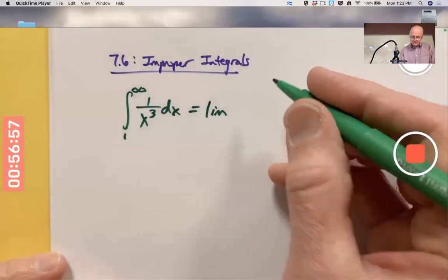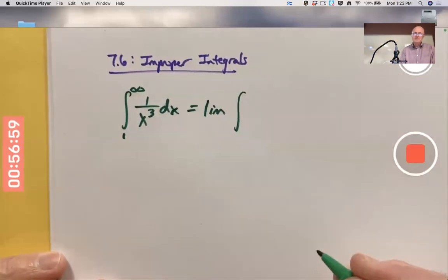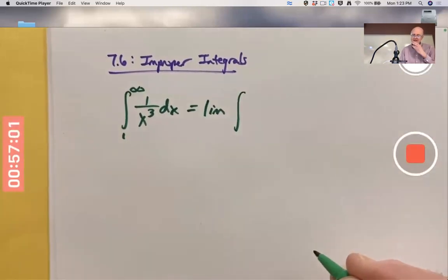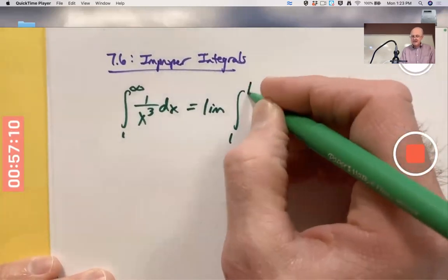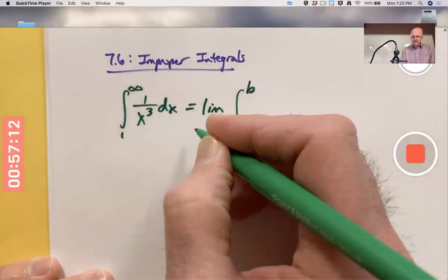What proper integrals? It's a limit of proper integrals where the upper limit of the integral is a variable. And that variable, I'll call it b, is the thing that's going off to infinity here.